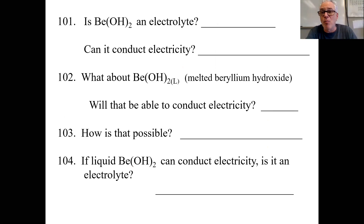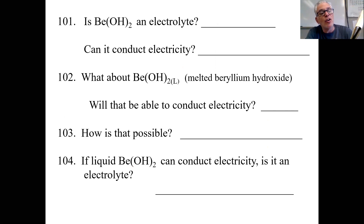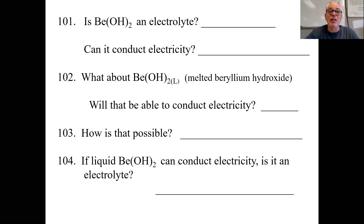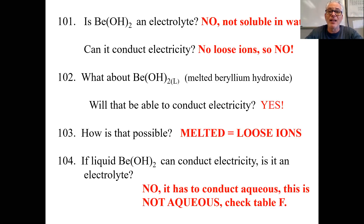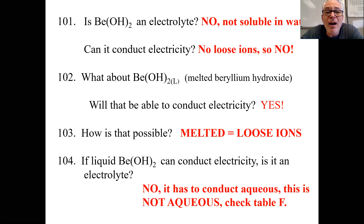Let's look on table F. If your name is hydroxide, you tend not to be aqueous — with exceptions — but beryllium is in group two. So beryllium hydroxide? It's not soluble in water. If it's not soluble, there are no loose ions. What about beryllium hydroxide liquid — melted?